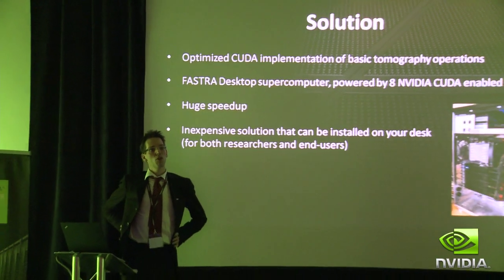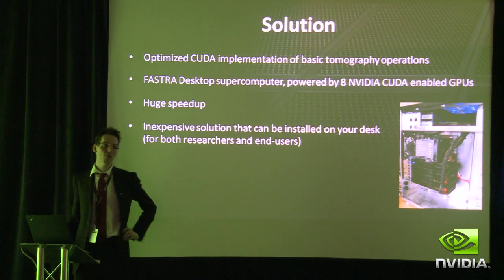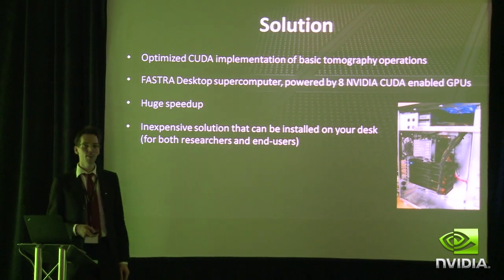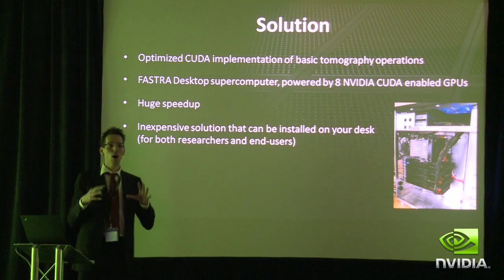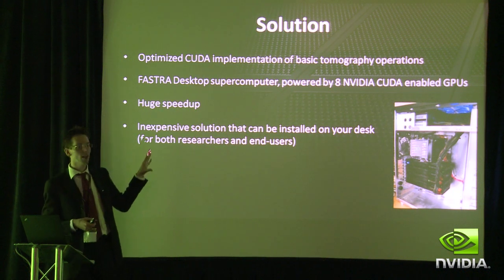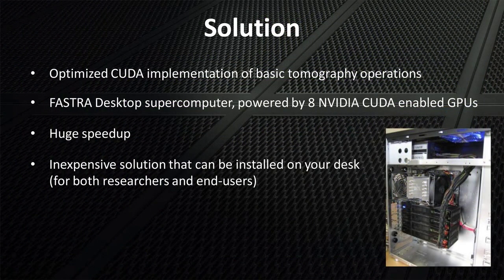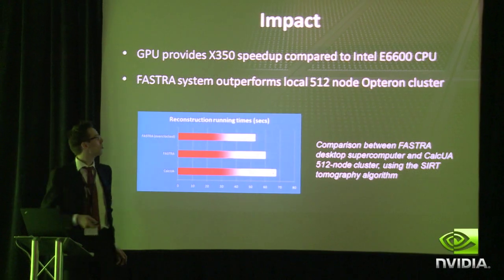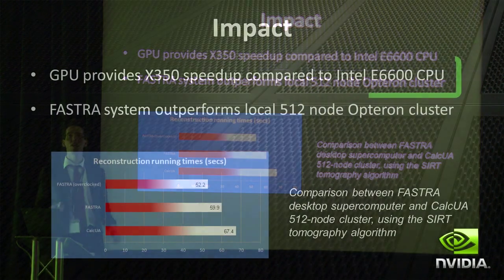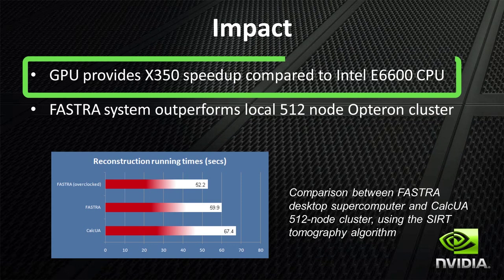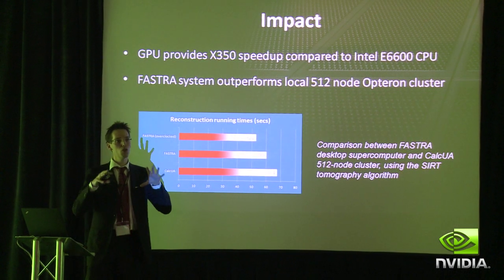When we first found out about NVIDIA CUDA, we saw a lot of potential in it. We put a lot of effort into implementing all of our basic tomography operations using the CUDA platform. This turned out to pay off. Our GPU system, which we have called the FASTRA after the research group, turned out to provide a speedup of 350 over a single Intel CPU core. It allows us to do on-the-fly tuning of our parameters and to do true research.